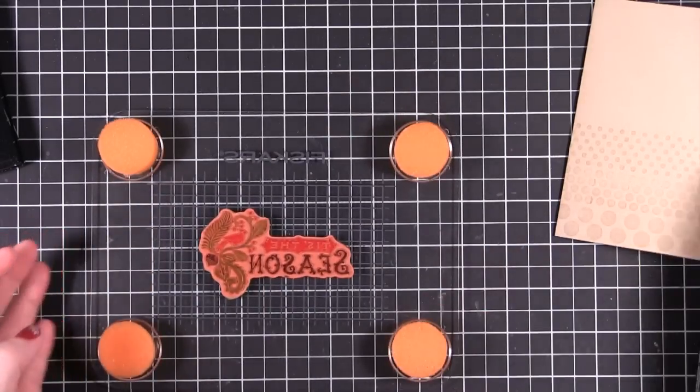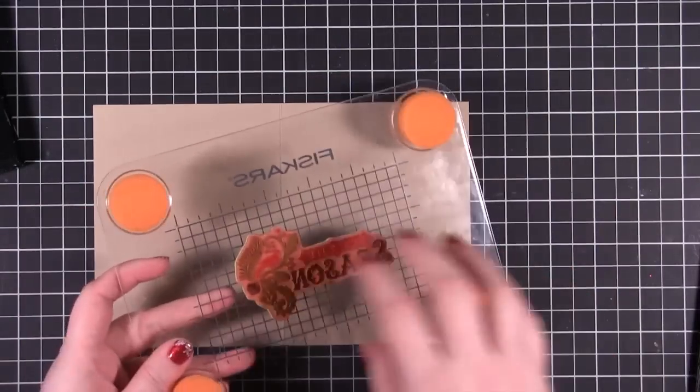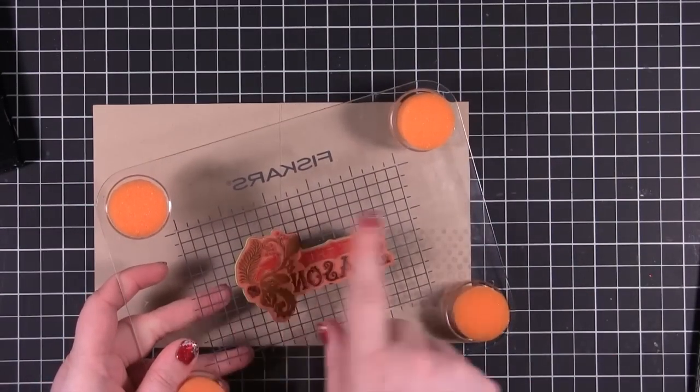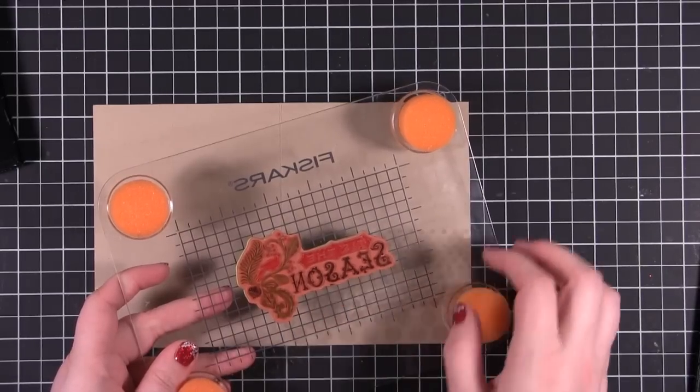Okay, so I've colored in the stamp. Before I stamp it on the front of this card, I'm going to breathe on it. My breath is going to add a little bit of moisture and it's going to reactivate that ink so that it's easier to stamp.